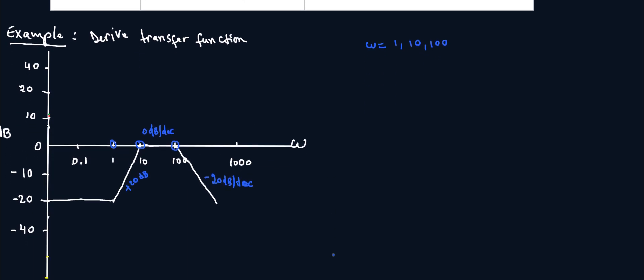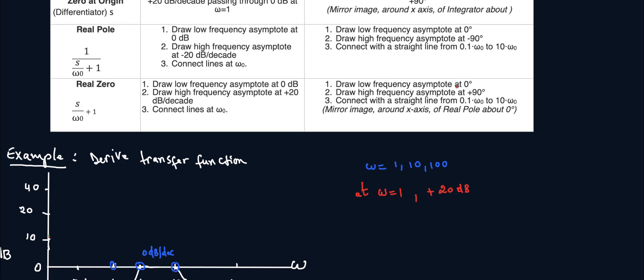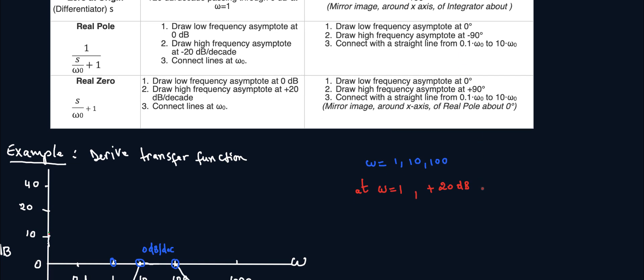So what we are interested in seeing here is a change in slope. So here at 1, what am I seeing? At omega equals 1 here, I'm going from 0 slope to a plus 20 slope. So at omega equals 1, I have added a plus 20 dB in slope. So what does that tell me? A plus 20 dB is a real zero. So I know that at omega 1 I have a real zero, which is represented by the equation S over omega 0 is 1 plus 1. And a real zero goes into the numerator, so this will be my first one at the numerator.